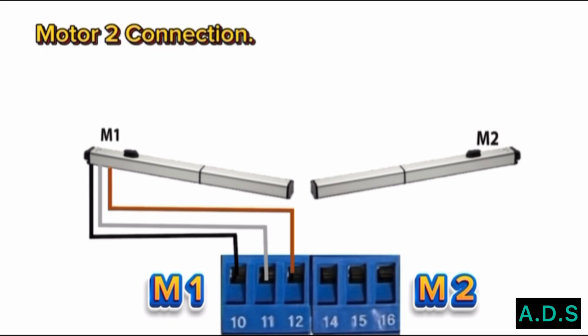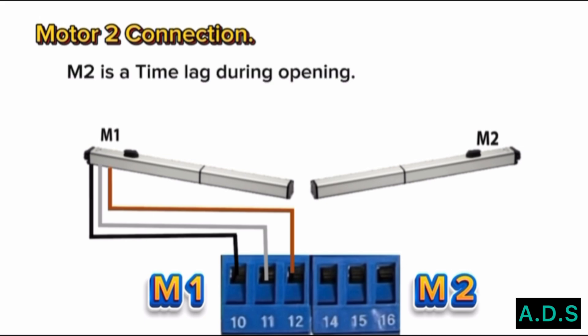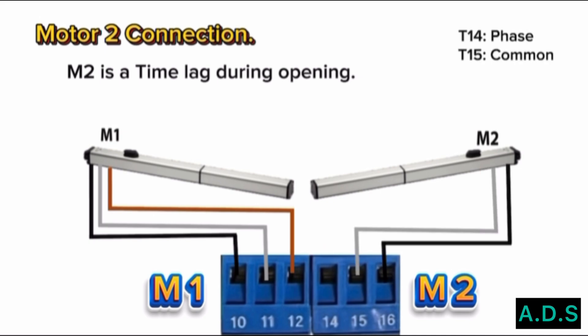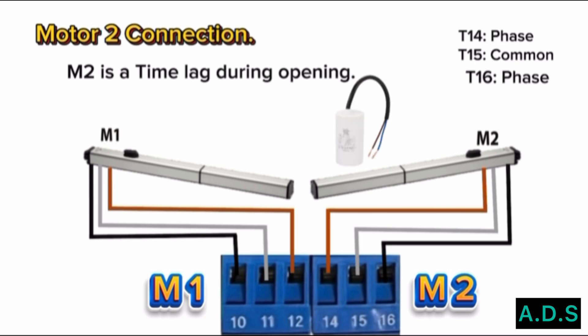Motor 2 connection. Motor 2 has a time lag during opening, meaning motor 1 opens first, then after some seconds, the delayed opening of motor 2 starts. Motor 2 is the first to close. Terminal 14 is the phase pin for motor 2 to run. Terminal 15 is the common pin for motor 2 — the motor common wire connects to terminal 15. Terminal 16 is the phase pin for motor 2 to run. Terminal 14 and terminal 16 will connect with a capacitor.